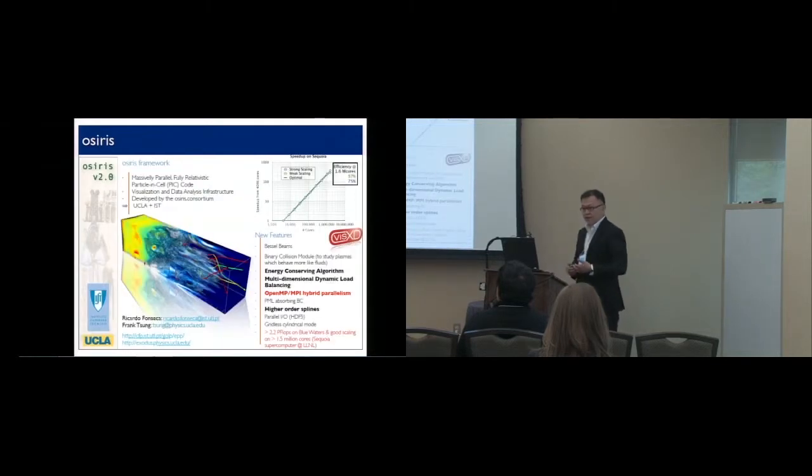The particular flavor of PIC code we're using is the code OSIRIS, developed here at UCLA. Some features of interest: it has an OpenMP and MPI hybrid parallelization, and we have very good performance on all the latest and greatest supercomputers. As of last year, we achieved over two petaflops sustained performance on Blue Waters and showed good strong and weak scaling on over 1.5 million cores on the Sequoia supercomputer when it came online last year.